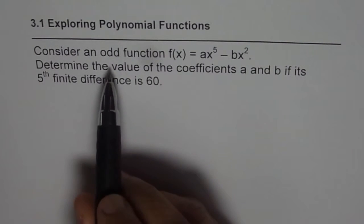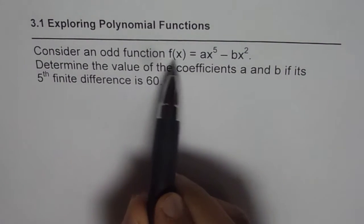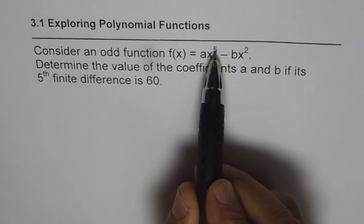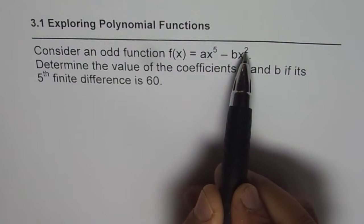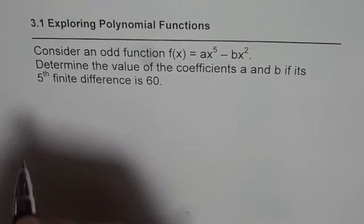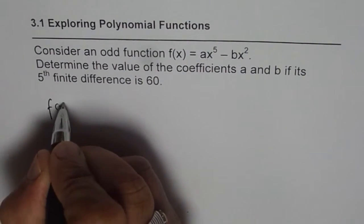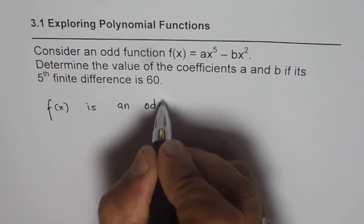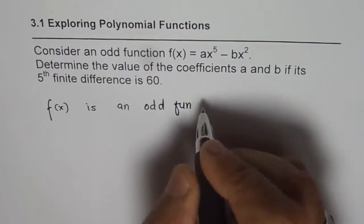Now here, odd function. When will this function be odd? This function has two terms, one is x to the power of 5, the other one is x^2. We are seeing odd function. So if f(x) is an odd function, then what? What is the value of b?